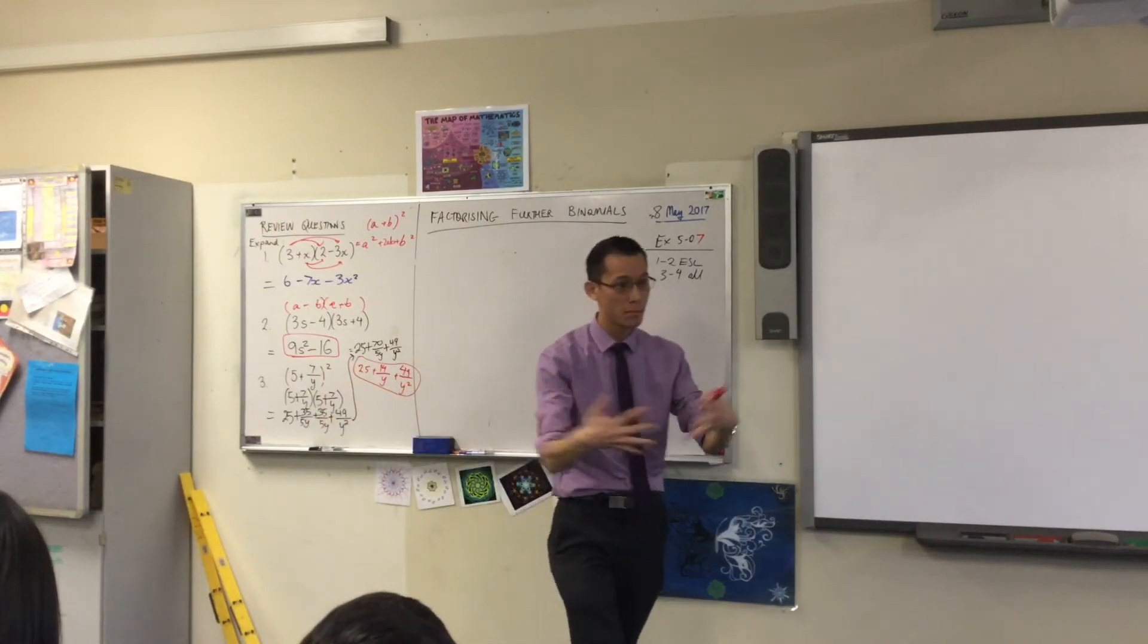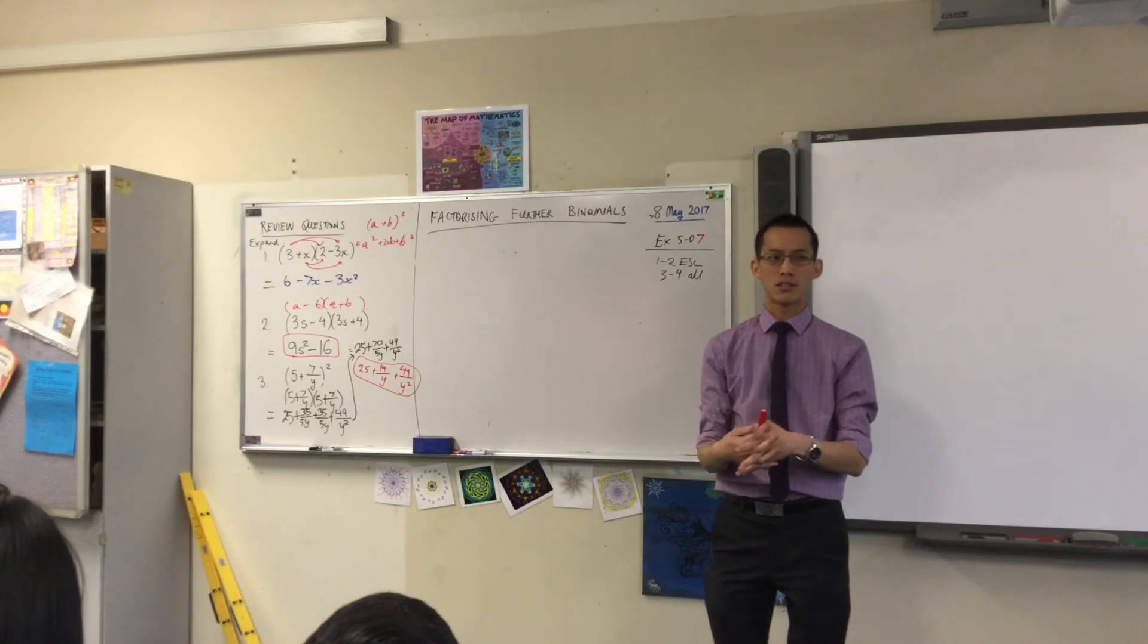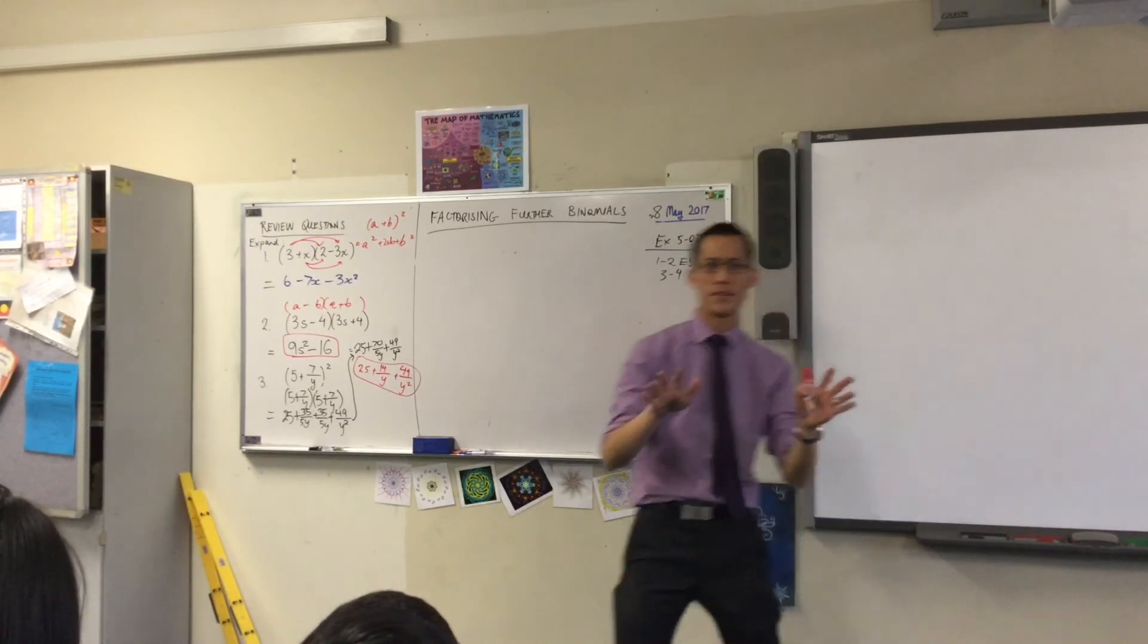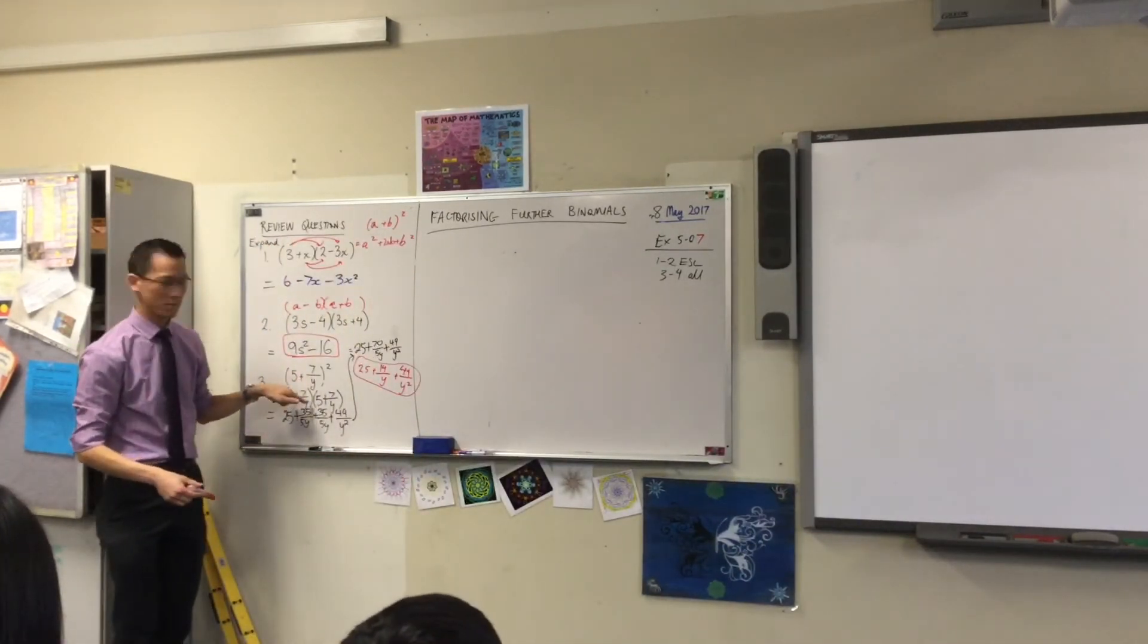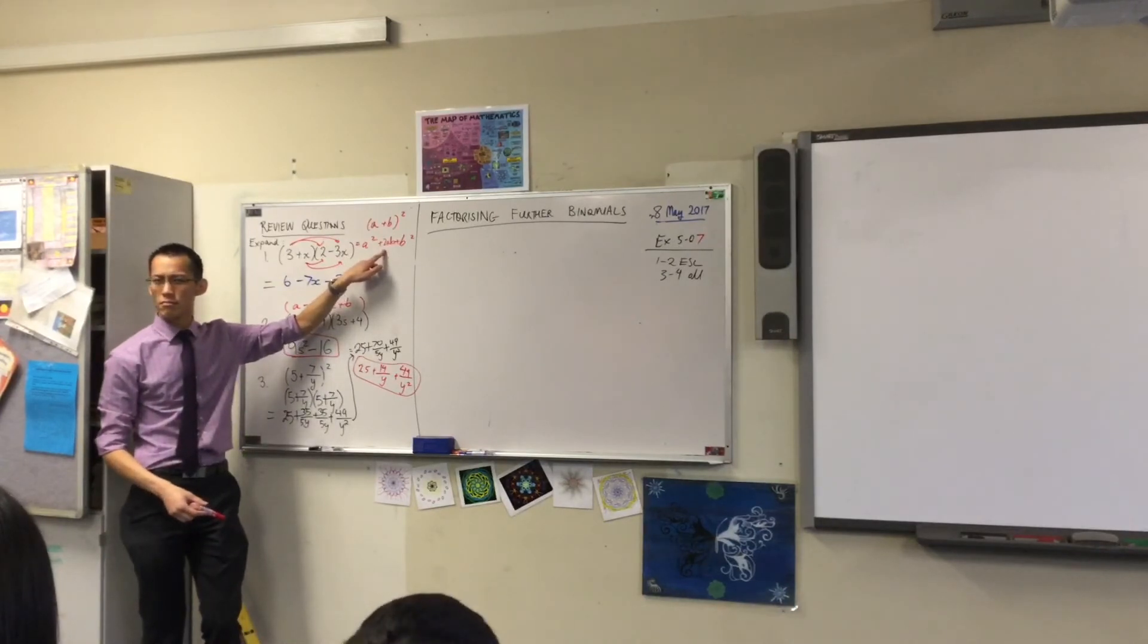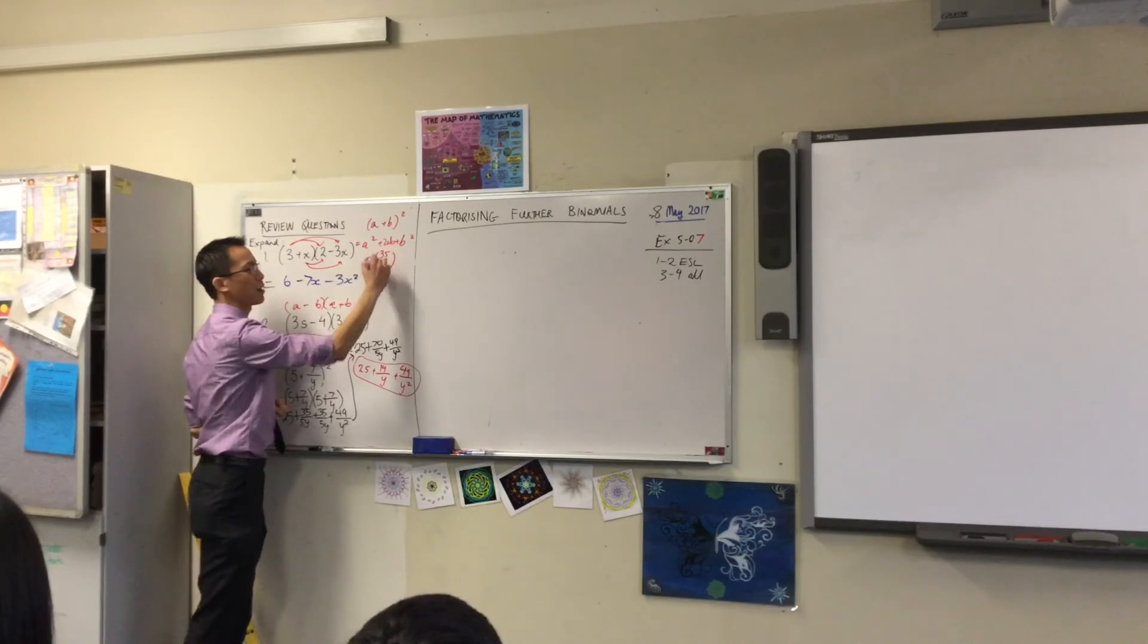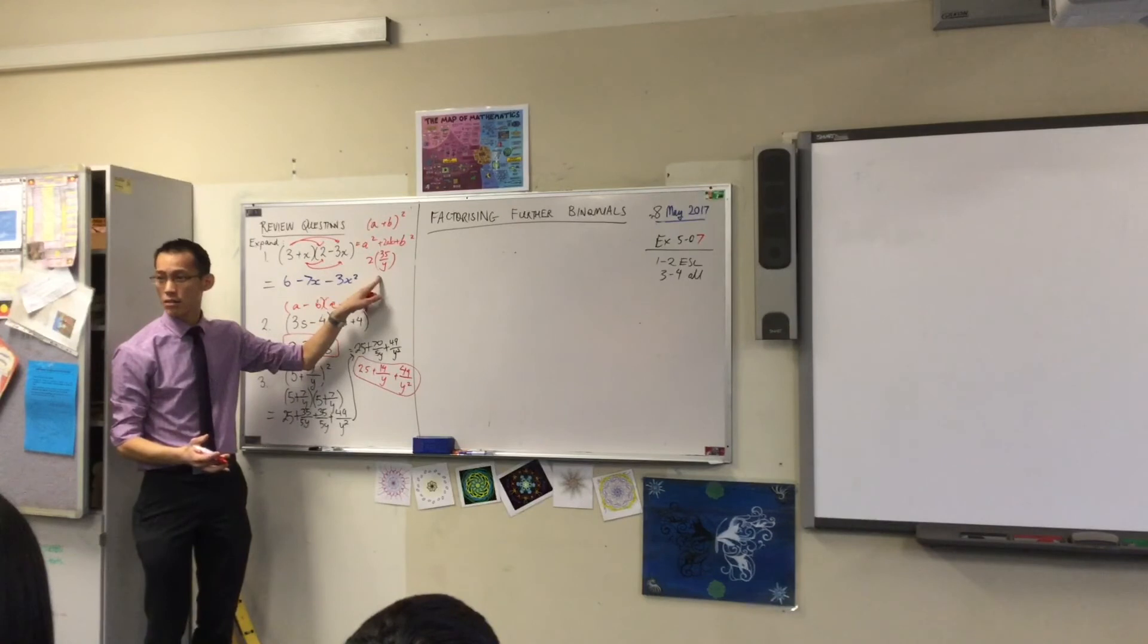So, I'm going to first multiply them together. 5 times 7 over y. What's 5 times 7? 35. 35 over y. And then you double it. Right? 35 over y. And then you double it. Did I do it right? Is that 2ab? Yeah.